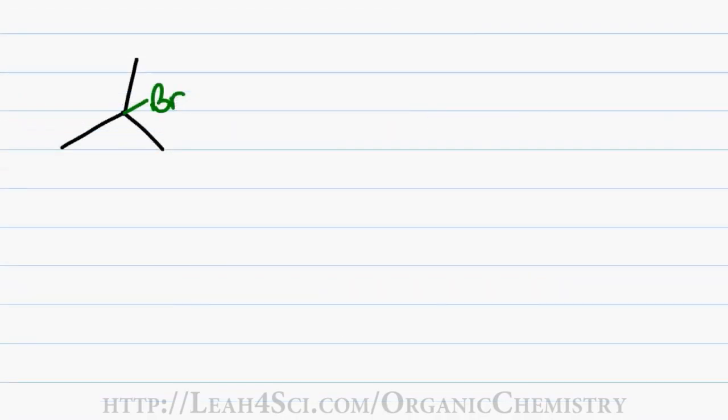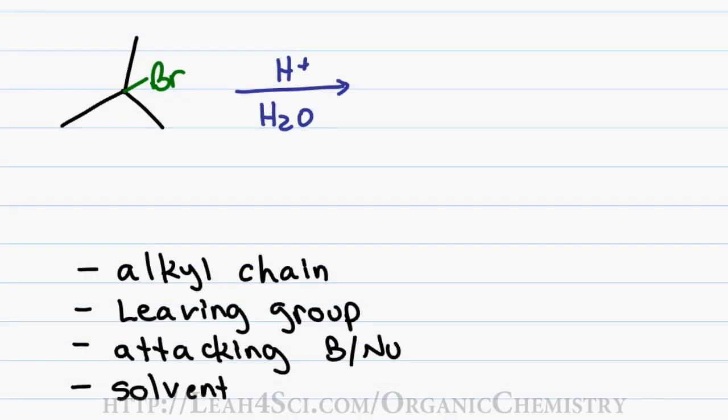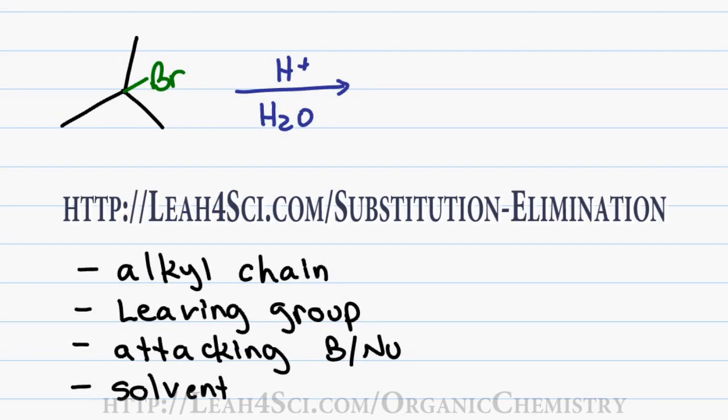Now let's analyze the SN1 reaction that happens when 2-bromo-2-methylpropane reacts with acid in the presence of water. There are 4 things you want to look at any time you study a reaction to determine between substitution and elimination or the 1 and 2 type reactions. I have detailed videos that go into every analysis step which you can find on my website leah4sci.com/substitution-elimination.